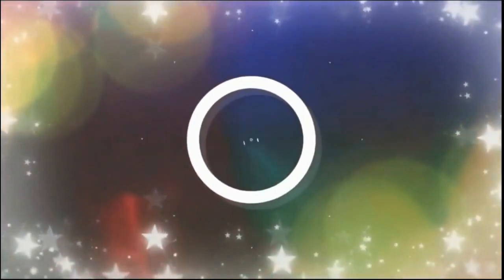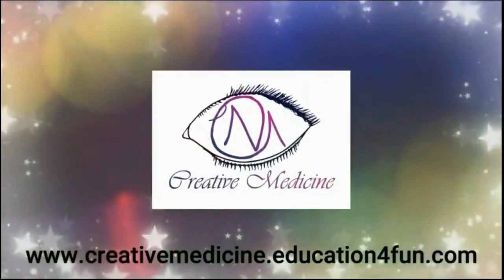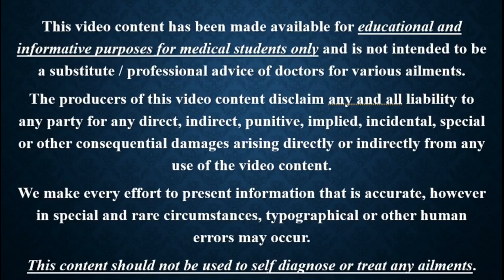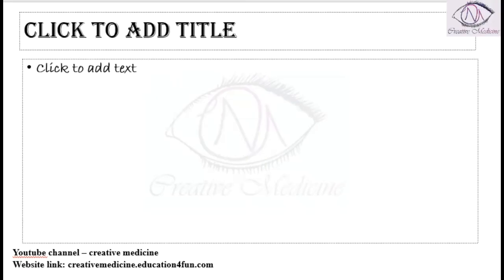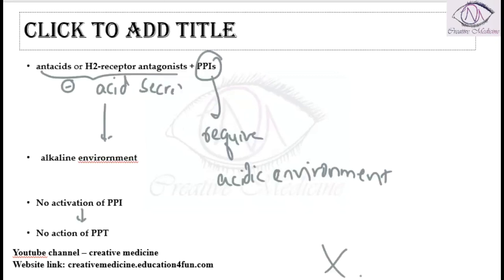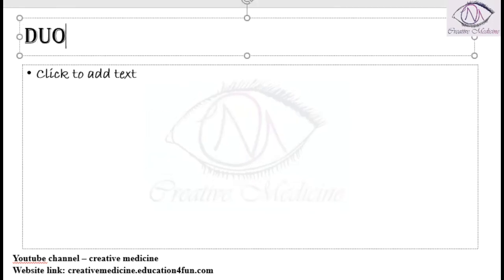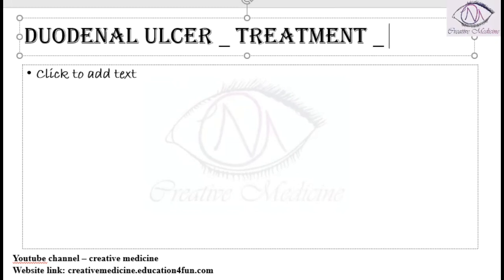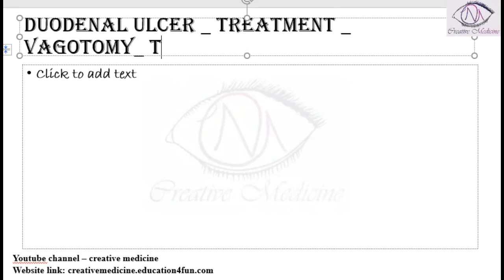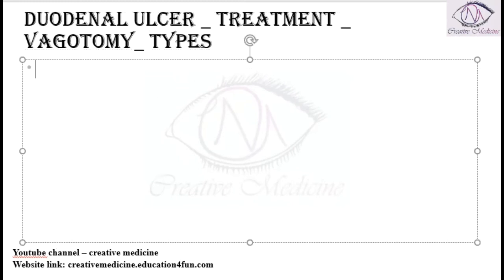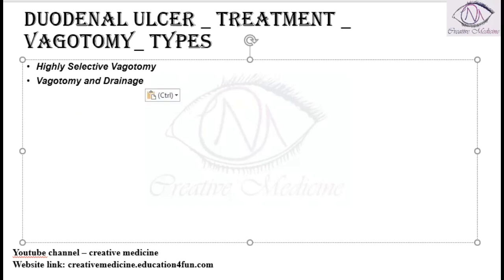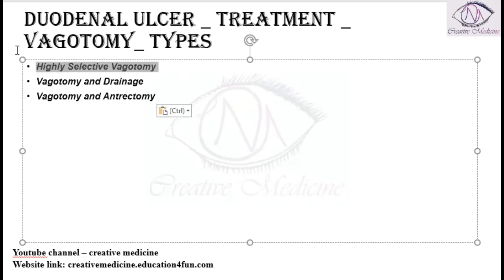Hello friends, welcome to Creative Medicine. In this lecture we will learn about the types of vagotomy. In duodenal ulcer treatment we do vagotomy. Vagotomy can be of three types: highly selective vagotomy, vagotomy and drainage, and vagotomy and antrectomy. First we will see highly selective vagotomy.